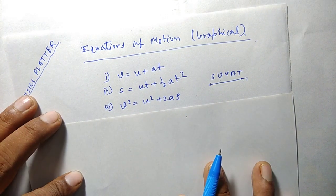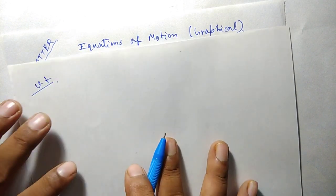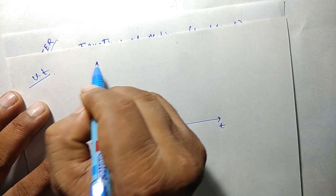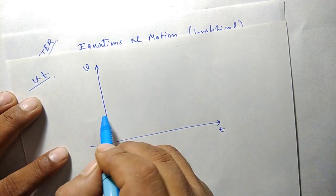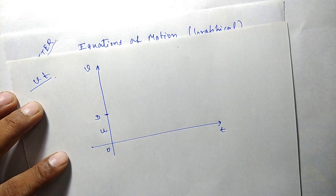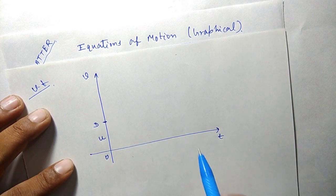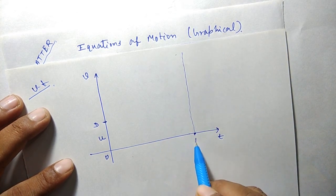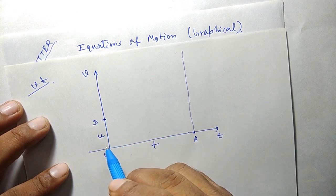To derive the equations graphically we will first draw the velocity-time graph, the v-t graph. Velocity is on the y-axis and time is on the x-axis. The body was already moving with a uniform initial velocity u — let's say this point is D and the velocity is u. When a force is applied, the body starts accelerating for time t. Let's say point A is at time t, so OA is time t.